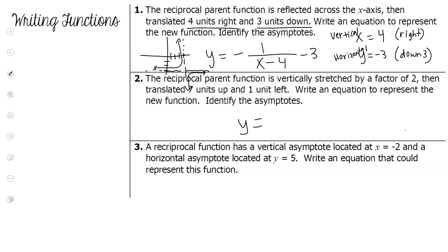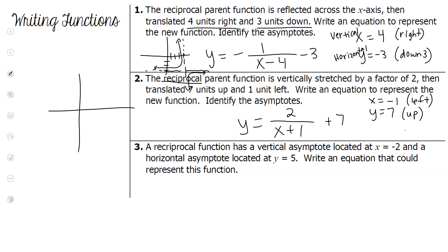Example 2: 'reciprocal' and 'rational' mean the same thing. It's vertically stretched by a factor of 2, translated seven units up, and one unit to the left. The equation is 2 over (x plus 1) plus 7. The vertical asymptote is x equals negative 1 because it went to the left, and the horizontal asymptote is y equals 7 because it went up seven. If stretched, it won't affect your domain and range.